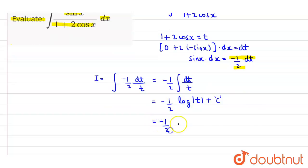Now put the value of t in the equation. What is the value of t? t is 1 plus 2 cos x plus c, where c is the integration constant. And this is our final answer for this question. Thank you.